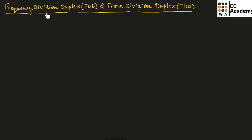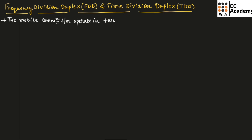Frequency Division Duplex is known as FDD and Time Division Duplex is known as TDD. The mobile communication system can operate in two transmission modes: Frequency Division Duplex (FDD) and Time Division Duplex (TDD).